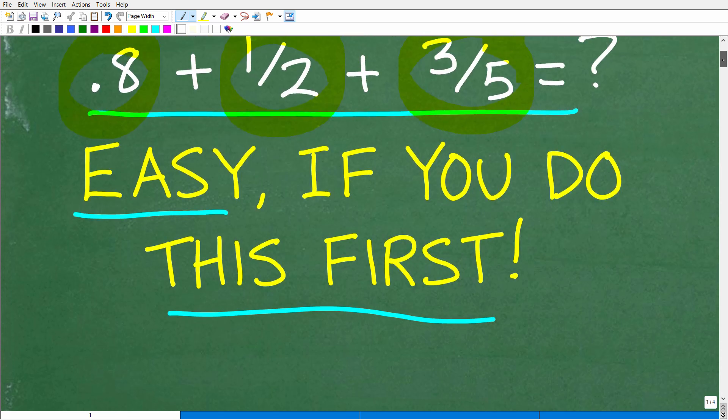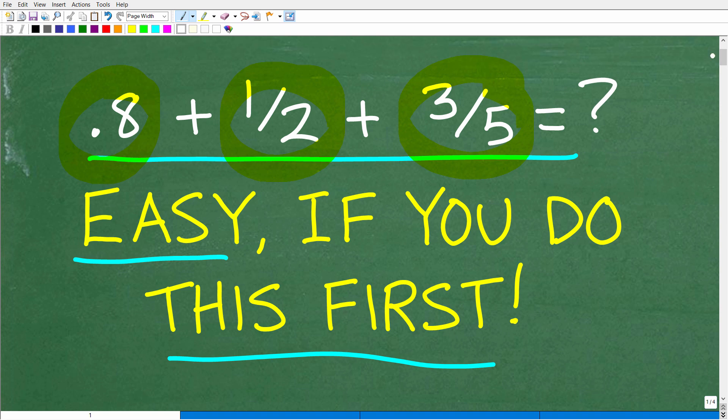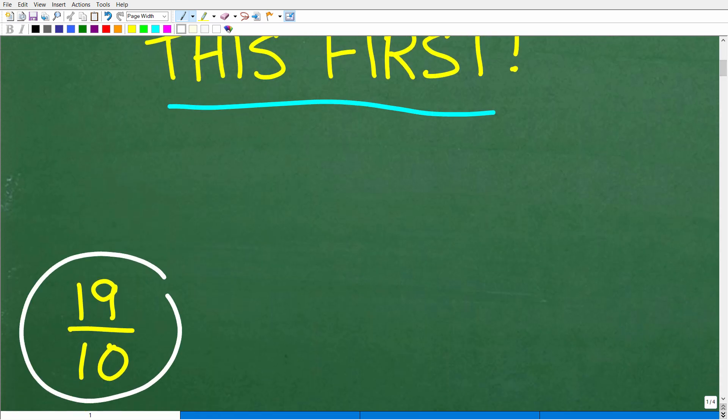Alright, now the one thing that I'm going to assume, because we're not using a calculator here, is that you have some basic knowledge of fractions and decimals. But let's go ahead and take a look at the answer. So 0.8 plus 1 half plus 3 fifths. Again, no calculator. Well, the correct answer is 19 over 10.